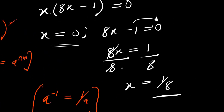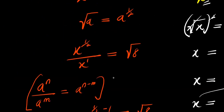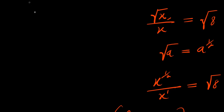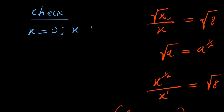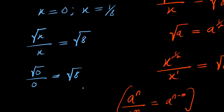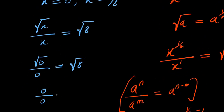So in this particular method we have only one solution, which is 1 over 8, while in the first method we had two different solutions: 0 and 1 over 8. Let's check if the solutions satisfy the equation. Starting with x equals 0: square root of 0 divided by 0 is 0 over 0, which is not the same as root 8, so x equals 0 is cancelled.